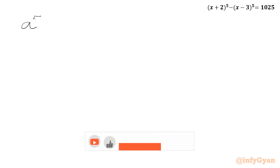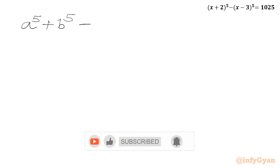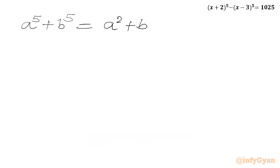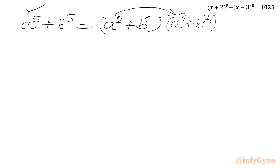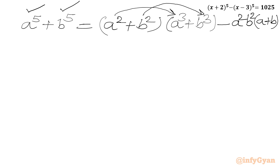Let us come back to our problem. I will use the a⁵ plus b⁵ result. I can write it in the form (a² plus b²)(a³ plus b³). Once I multiply a² with a³ I get a⁵, and b² with b³ I get b⁵. But I have to subtract the cross-product terms a²b³ and a³b², taking a²b² common, leaving a plus b in the bracket.